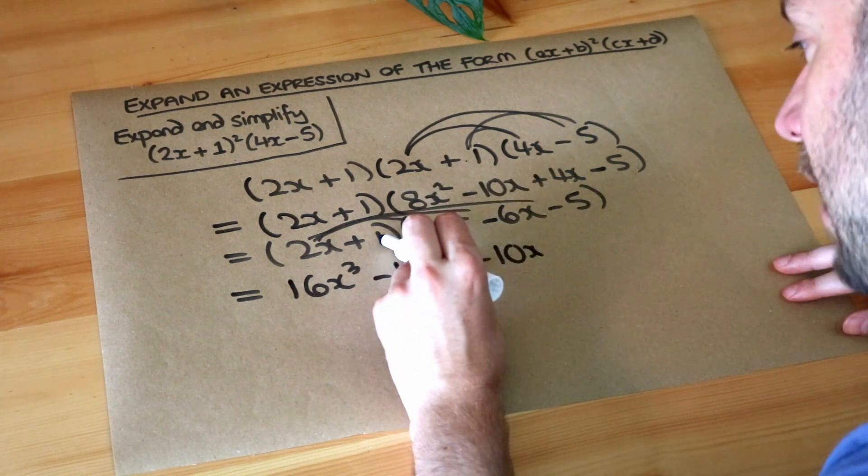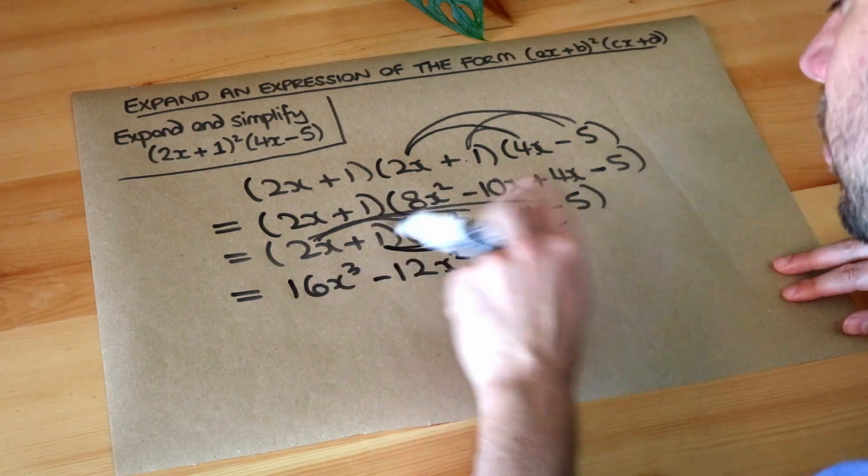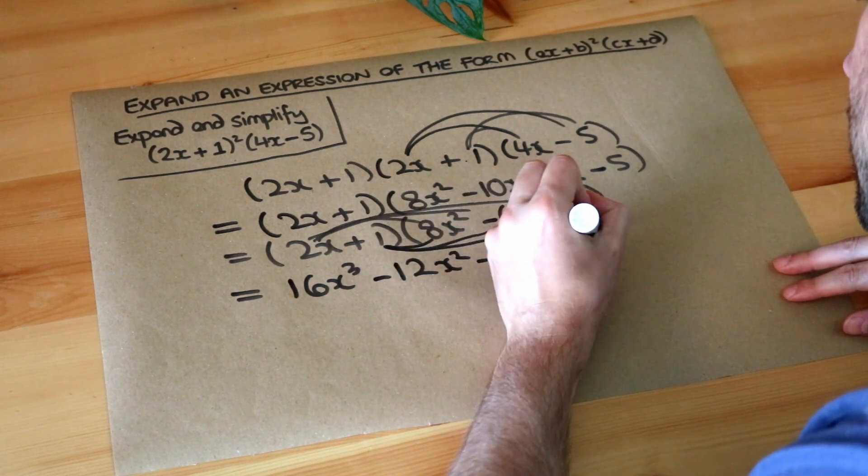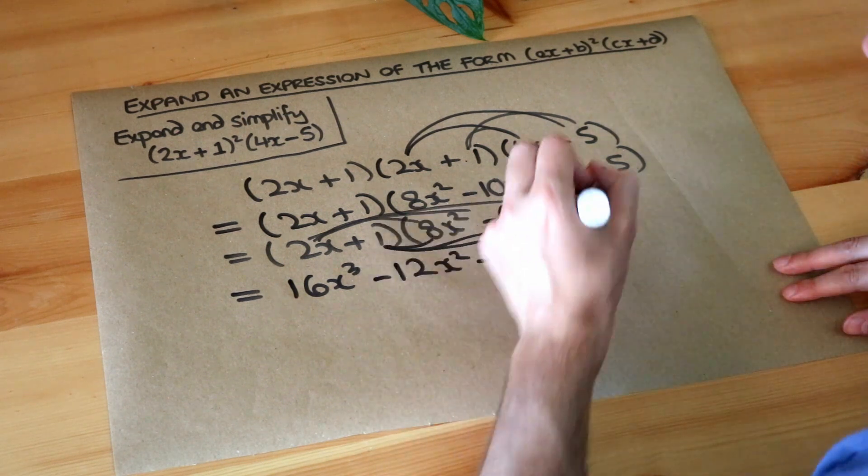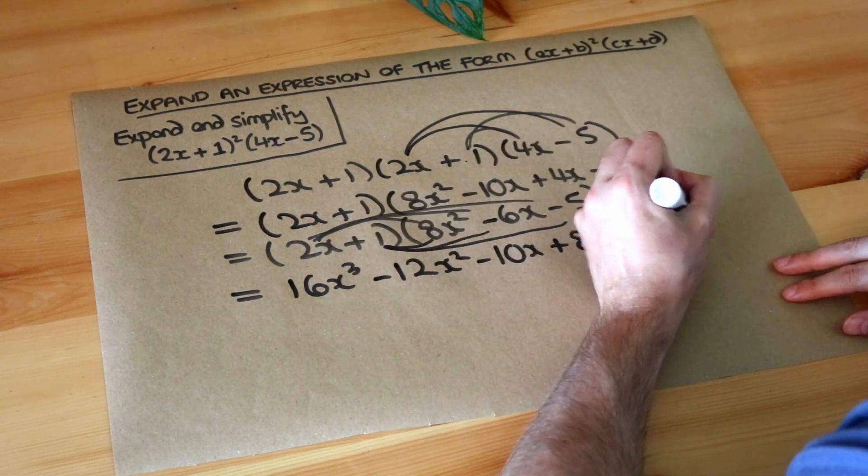And now we do the second thing, the 1 multiplied by each of these things here. So 1 times 8x squared is 8x squared. 1 times minus 6x is minus 6x. And 1 times minus 5 is minus 5.